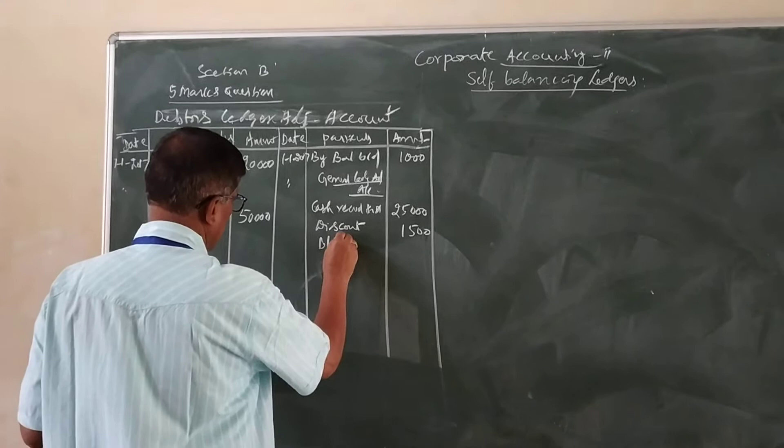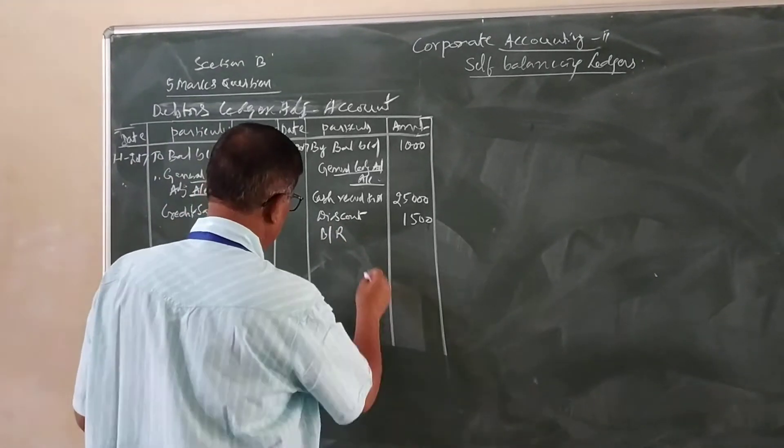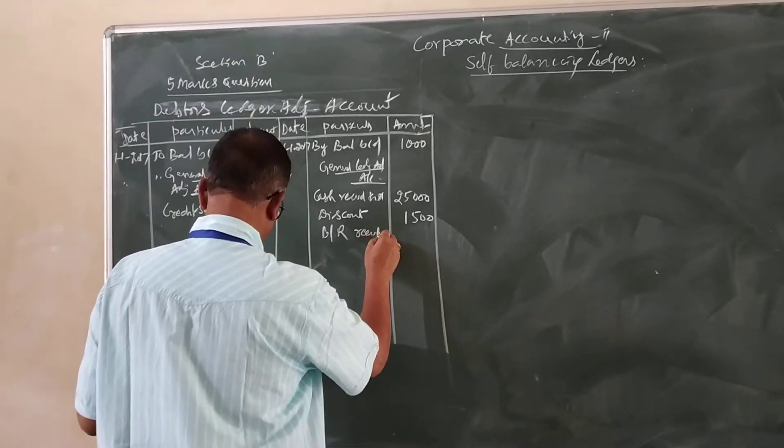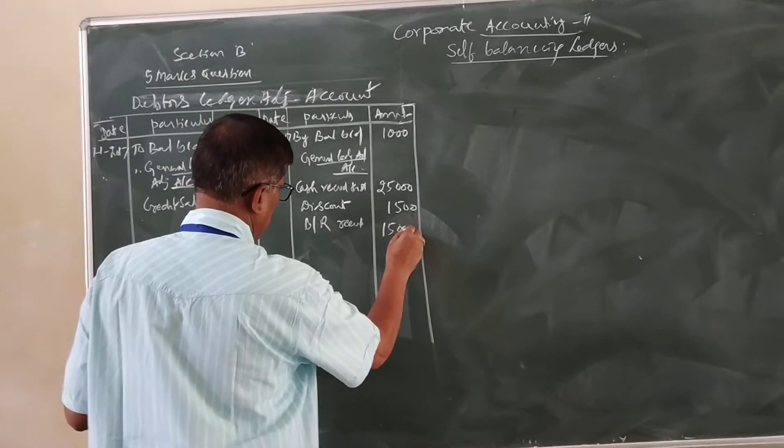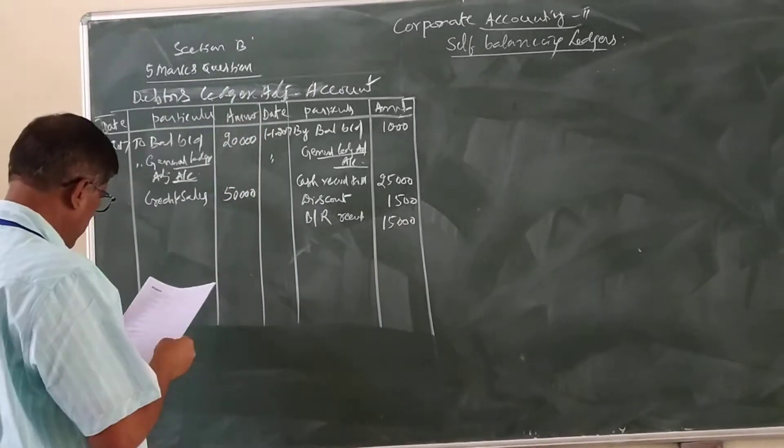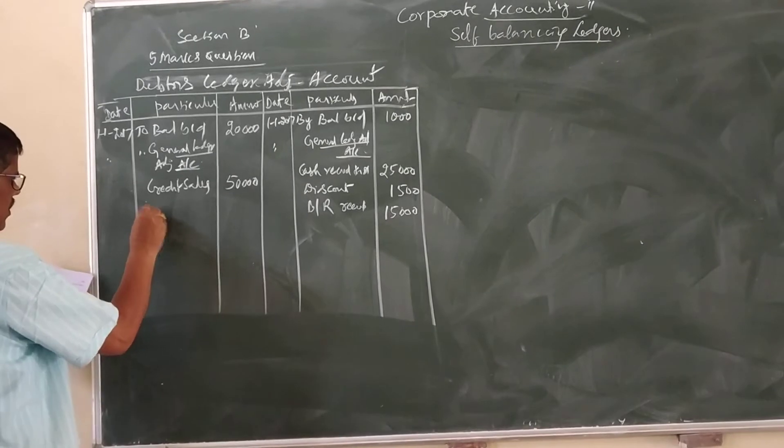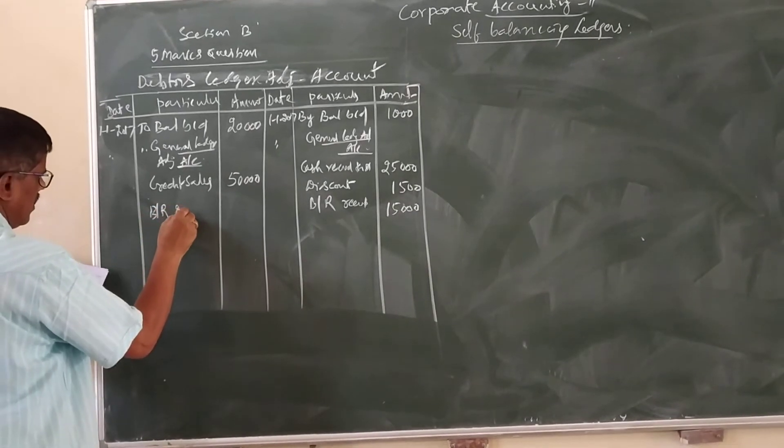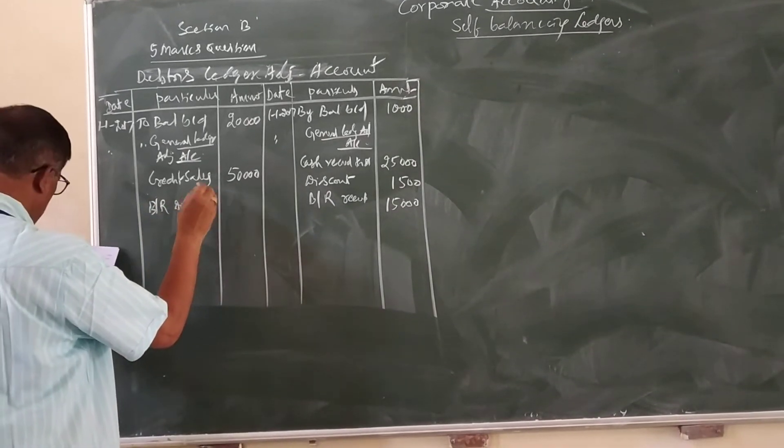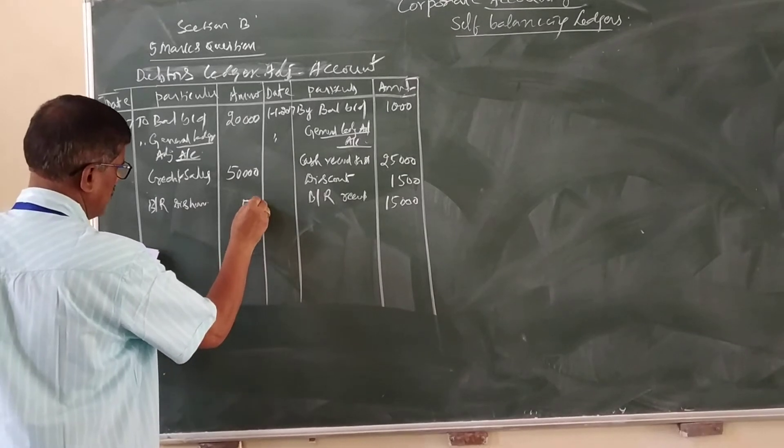Bills receivable received 15,000. Then bills receivable dishonored 500 rupees.